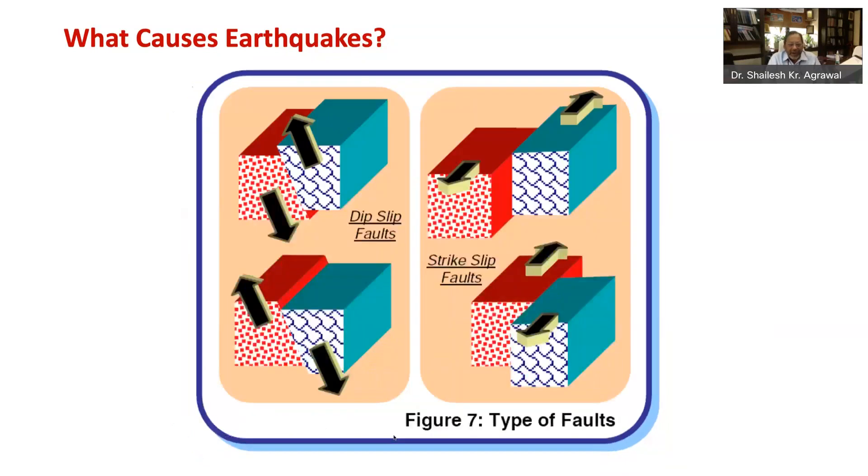Before we end, let's have a look on types of earthquakes and faults. Most earthquakes in the world occur along the boundary of tectonic plates. These earthquakes which happen along the boundary of tectonic plates are called interplate earthquakes. For example, the 1897 Assam India earthquake was an interplate earthquake.